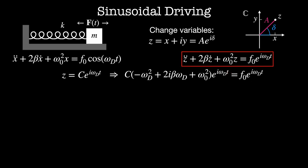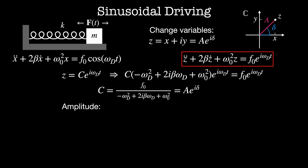All of the terms that depend on time cancel out and we can solve for c in terms of the constants f naught, omega_d, beta, and omega naught. Since we're still interested in finding a real function x and not the complex function z, we need to handle the fact that c is a complex number. Rather than splitting directly into real and imaginary parts, we're going to use the geometry of the complex plane to write c as an amplitude and a phase — that is, in the form a e to the i delta.